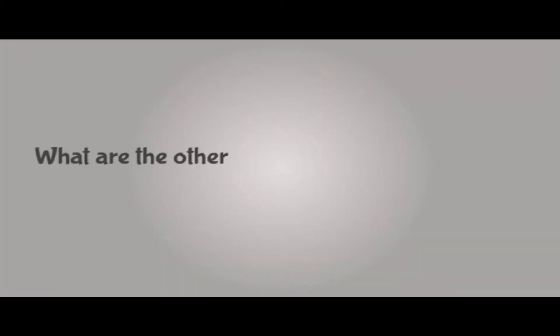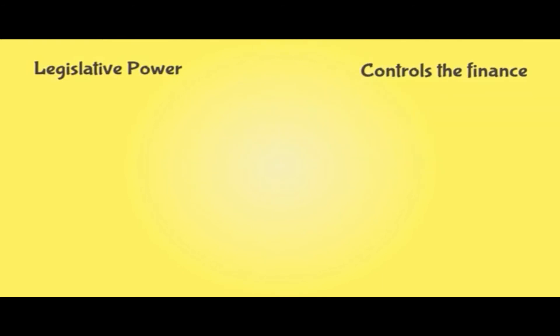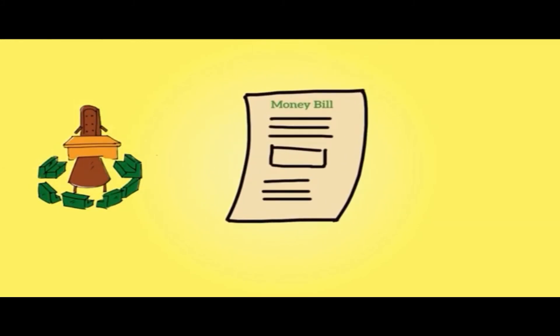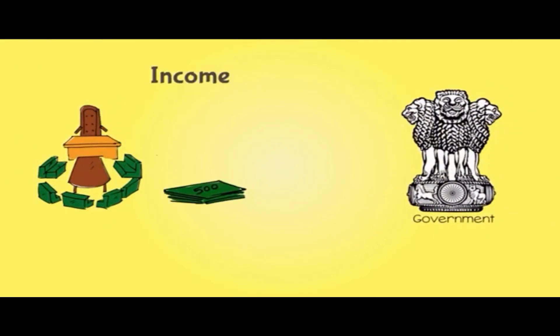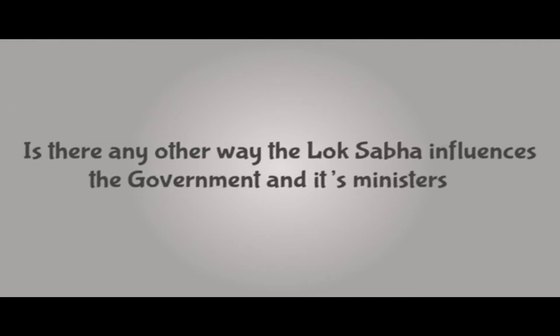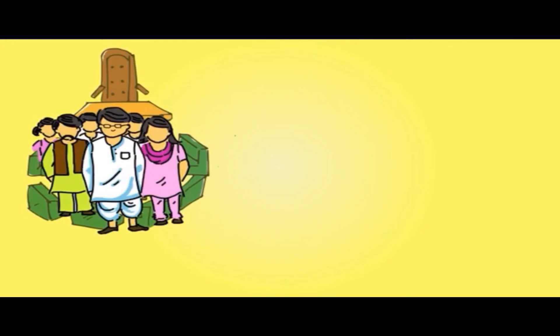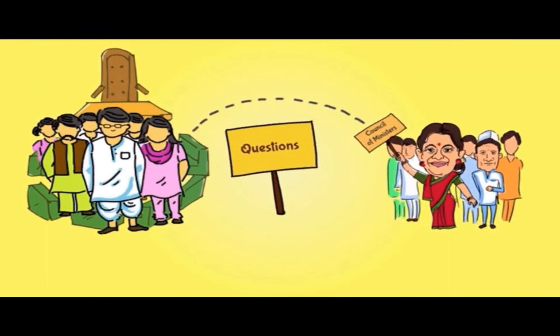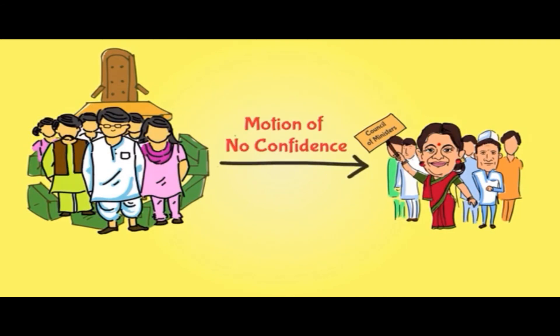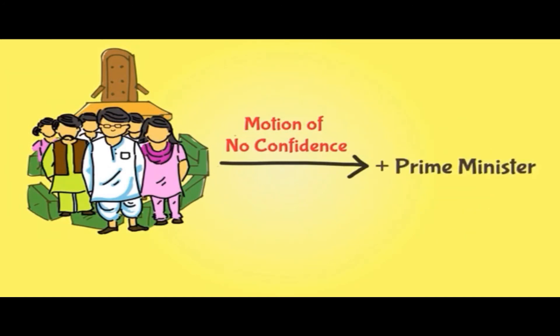Apart from legislative powers, the Lok Sabha also controls the finance of the country. A money bill has to be introduced in Lok Sabha. The government prepares the budgets of income and expenditure, which has to be approved by the Lok Sabha. Lok Sabha can also ask questions to the Council of Ministers for their actions and controls them. If the Lok Sabha passes a motion of no confidence with a majority vote against the Council of Ministers, the Council of Ministers has to resign, including the Prime Minister.